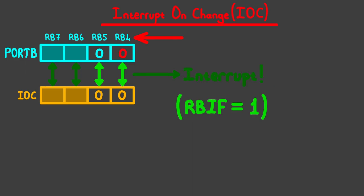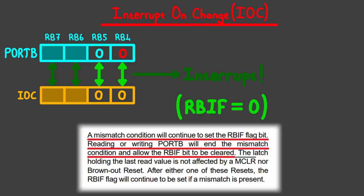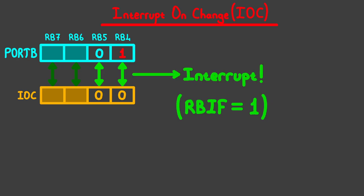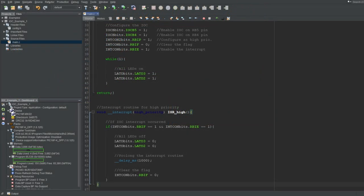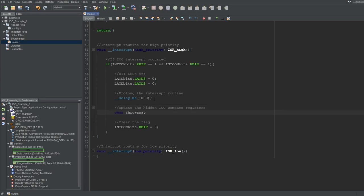Only when I stop holding the button does PORTB go back to 00, and the flag bit stops getting instantly set after being cleared. You can also read the datasheet to learn about this trap, which is also why I recommended reading the dedicated datasheet sections for interrupts. To fix this problem, we can just read the state of the PORTB register before clearing the interrupt flag, which will cause the new PORTB value to be latched onto the hidden register. You can try reading PORTB into a throwaway variable, but there's a better way.